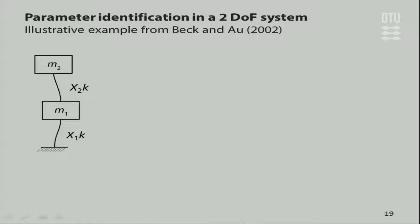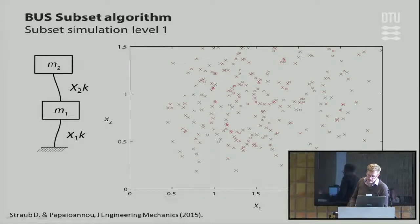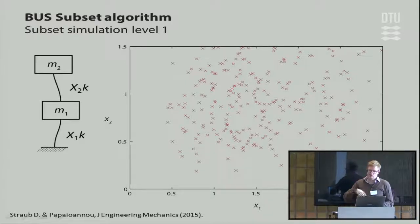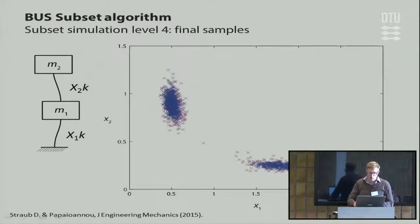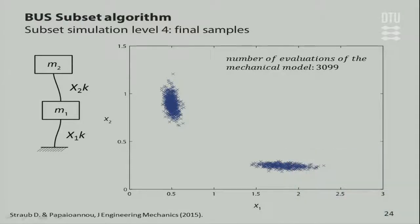A brief example: identifying the stiffness values of a two-story building, first and second floor. Sampling from the prior with large uncertainty, we use rejection sampling combined with subset simulation and sequentially approach the posterior distribution. If you know structural reliability, you can implement this and it works well in high dimensions — with hundreds of parameters. The posterior is locally identifiable — we find two possible regions of solution. Many of these methods work sequentially, starting from the prior and progressively approximating the posterior, which is the updated model.